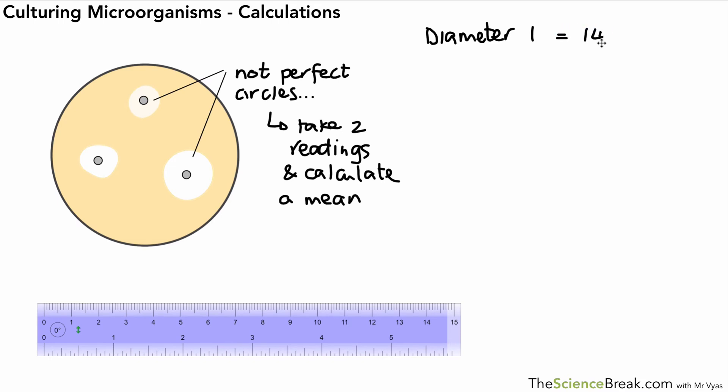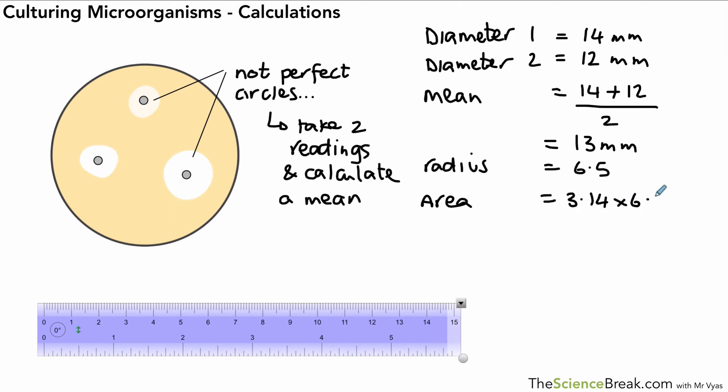We can calculate one, calculate the second, and then do our working out. Diameter one we had as 14 millimeters, and diameter two was 12 millimeters. The mean of those two would be adding them up and dividing by two, which gives us a mean diameter of 13 millimeters. Then we can use our radius as half of that number, which is 6.5. The area is 3.14 times 6.5 squared. If we put it in the calculator, it gives us 132.67, and again that's millimeters squared, rounded to two decimal places.